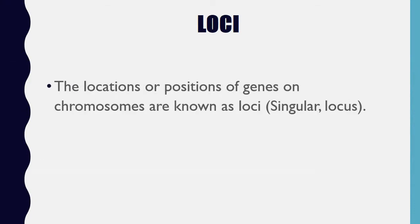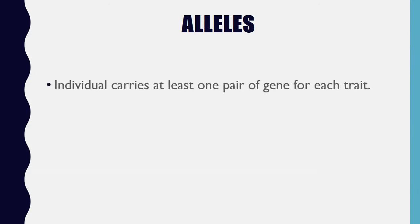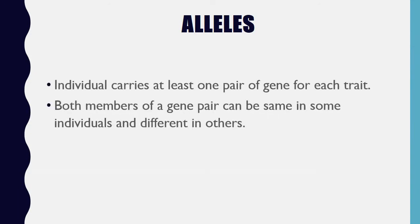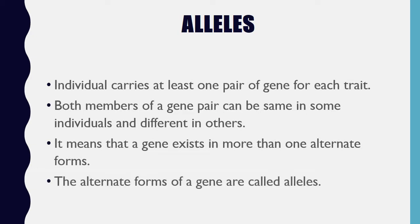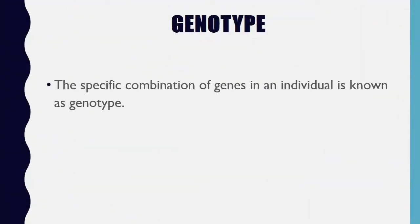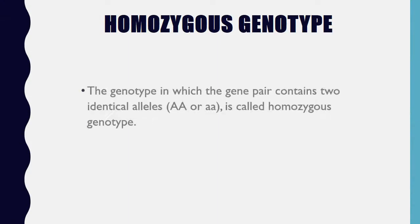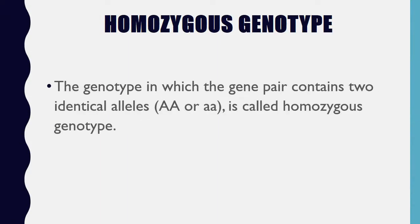Loci: the locations or positions of genes on chromosomes are known as loci (singular: locus). Alleles: an individual carries at least one pair of genes for each trait. Both members of a gene pair can be the same in some individuals and different in others, meaning a gene exists in more than one alternate form. The alternate forms of a gene are called alleles. Genotype: the specific combination of genes in an individual is known as genotype. Homozygous genotype: the genotype in which the gene pair contains two identical alleles (AA or aa) is called homozygous genotype.